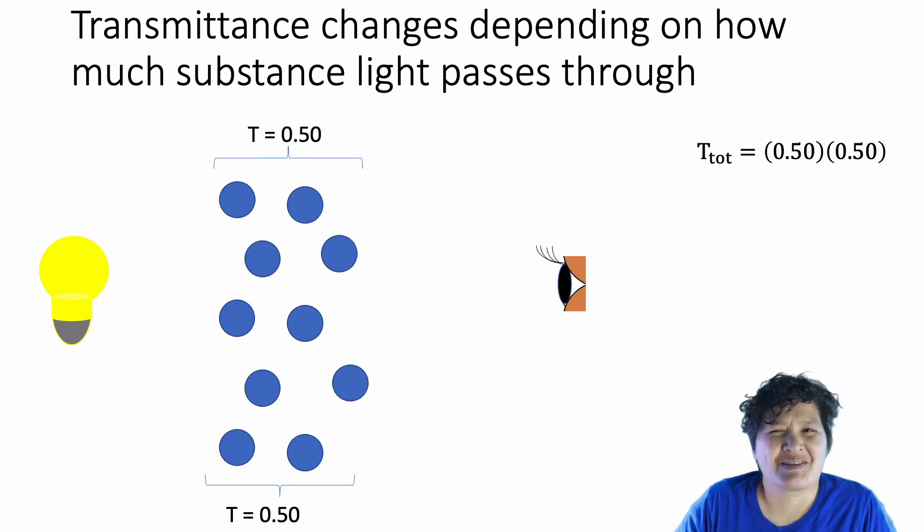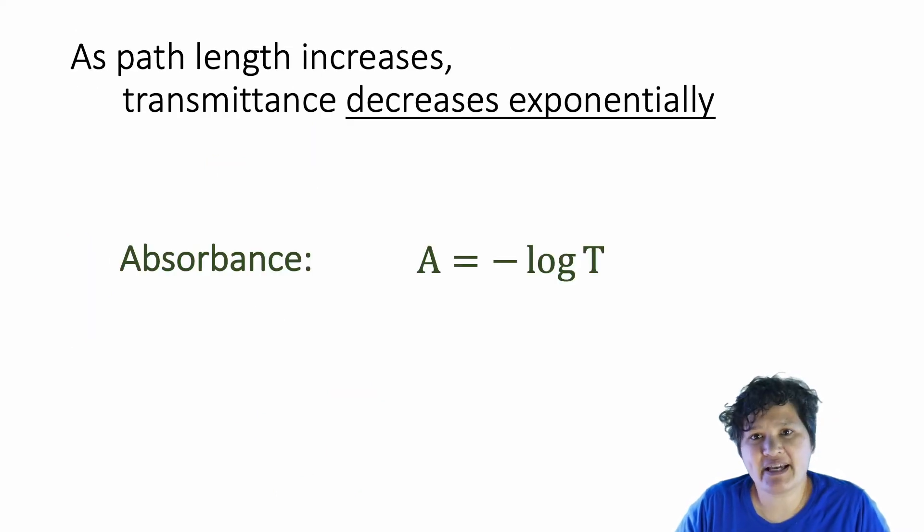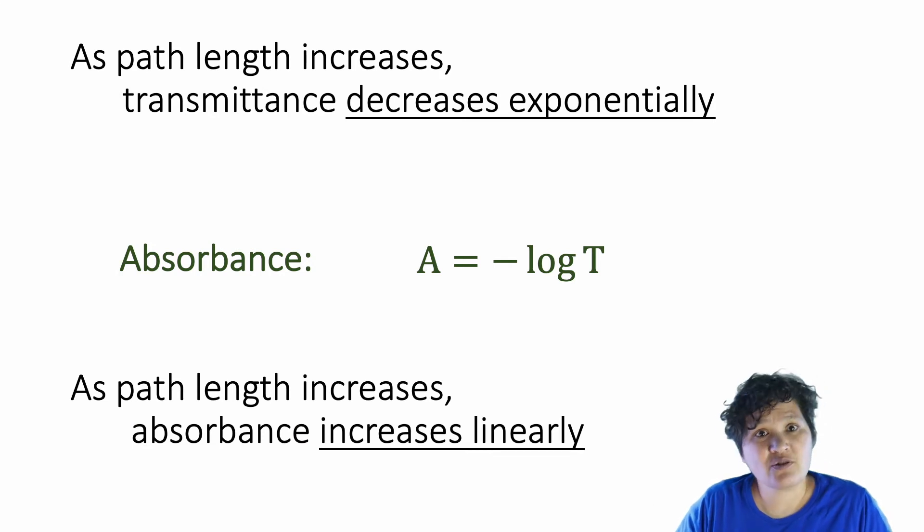You know, we scientists love to make things linear. So we've created a different variable that we call absorbance, which we define as the negative log of the transmittance. So you can see that if the transmittance is decreasing exponentially with increasing path length, that means absorbance will increase linearly with increasing path length.